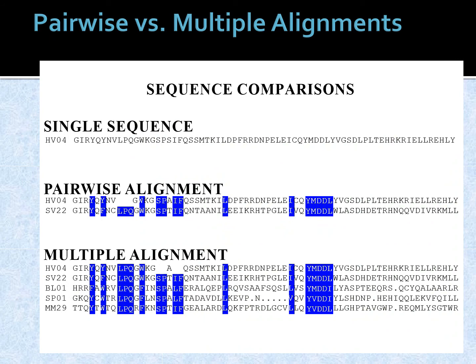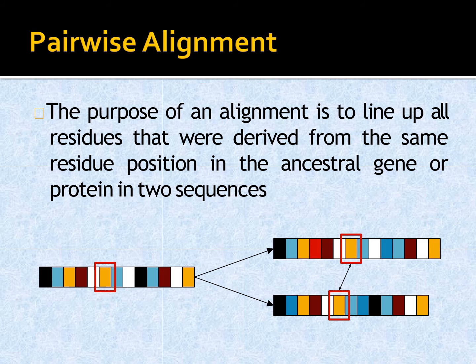Talking about pairwise versus multiple alignments: pairwise sequence alignment includes just two sequences — a first and a second sequence. Multiple sequence alignment includes many sequences. There are techniques for multiple alignments as well, but we'll focus on pairwise alignments such as global and local alignment for now and cover multiple alignments later.